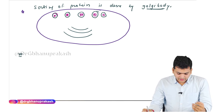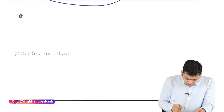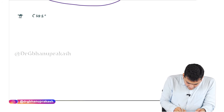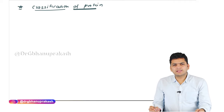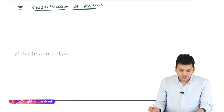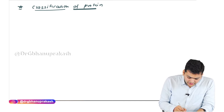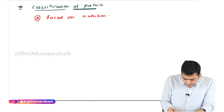Now we'll see the classification of protein. Whenever we classify anything, we first need to understand on what basis we are doing the classification. The first classification we are going to discuss is based on nutritional value.